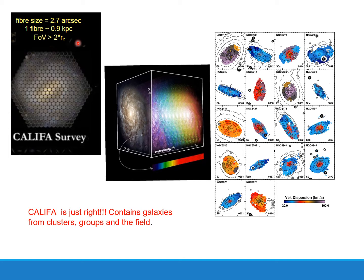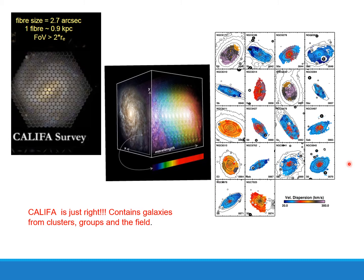This data is really beautiful. The fibers on the sky cover 2.7 arc seconds and you can accommodate a full galaxy and perform all sorts of analysis. Many papers have already been published with this dataset called CALIFA. This is the CALIFA observation of Seyfert's Sextet. Galaxy A is the brightest. Only half of it is observed within the footprint. Galaxy B is really the one they were after. There is galaxy C and part of galaxy F. Galaxy E is a background galaxy, and galaxy D is outside but this zone is related to the group.